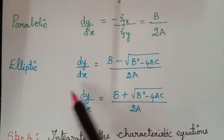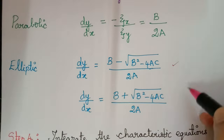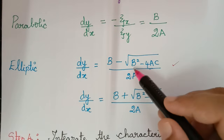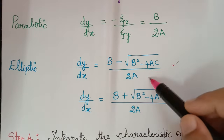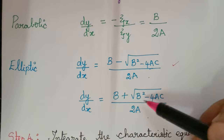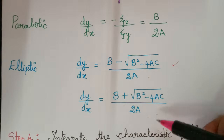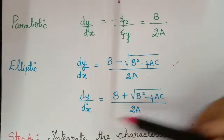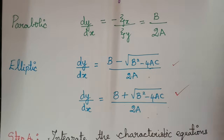For elliptic type, the characteristic equations are given by (B minus square root of B²-4AC) / 2A and (B plus square root of B²-4AC) / 2A, both equal to dy/dx. These are the characteristic equations.